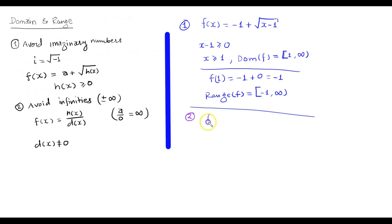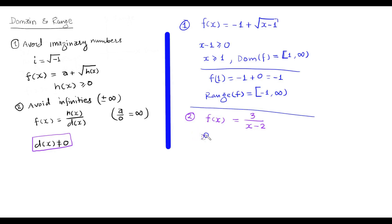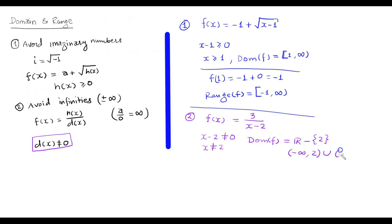Now let us go for the second example. Let f of x equals 3 divided by x minus 2. This is a quotient function, so by the second rule we need to avoid infinities. We must restrict our domain so the denominator is non-zero. Since the denominator is x minus 2, we set x minus 2 not equal to 0, meaning x should not equal 2. So the domain of f is all real numbers except 2, which we can write as (−∞, 2) ∪ (2, ∞).